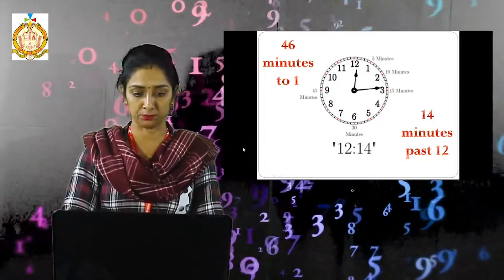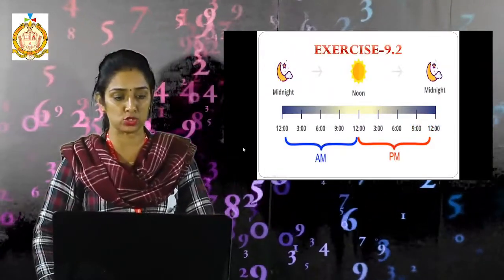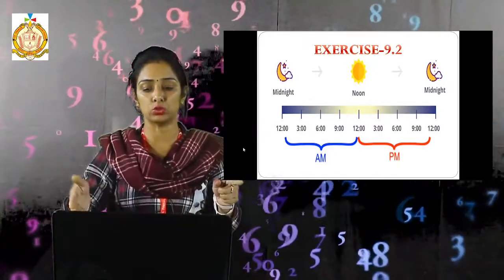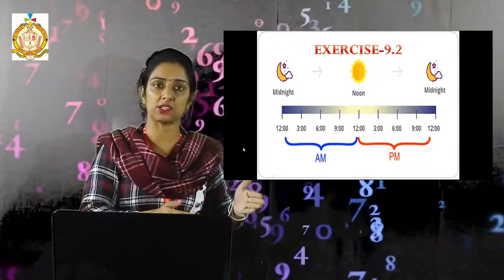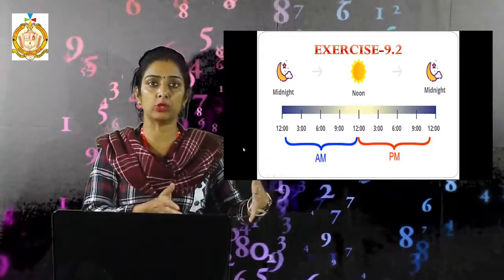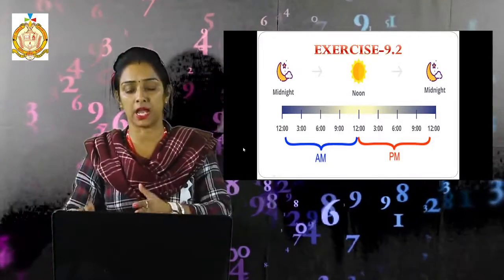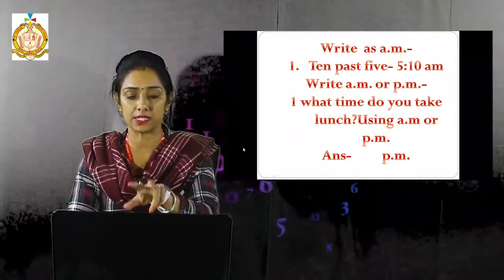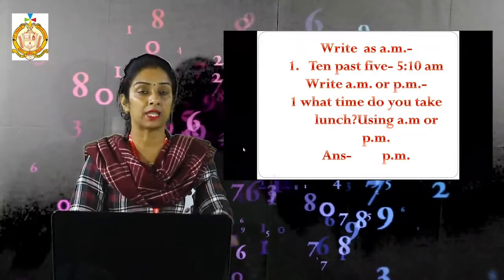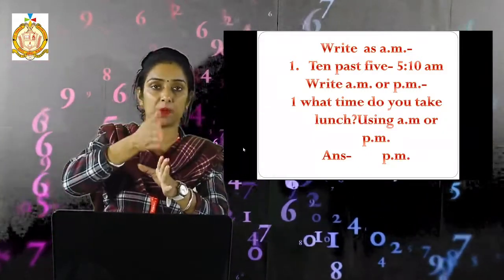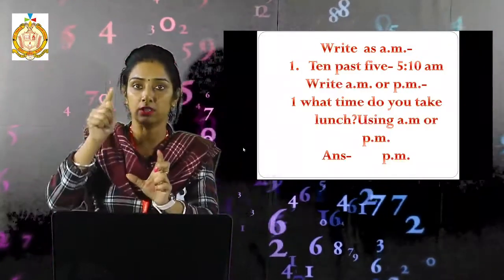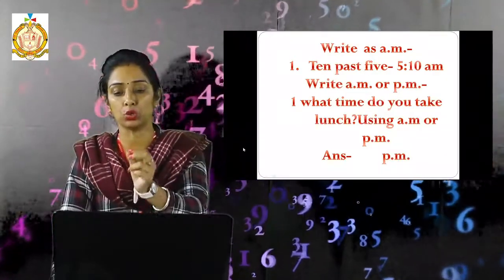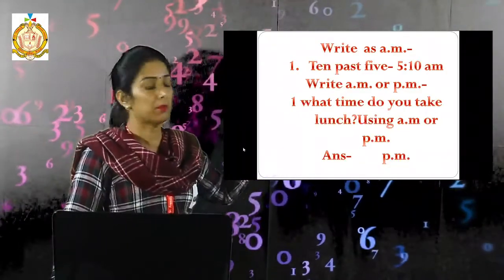See exercise 9.1 and 9.2. The time table shows: before noon it is AM and after noon it is PM. Midnight twelve to noon twelve is AM, and from noon to midnight is PM. For example, 'ten past five' means ten minutes past five, so we write it as 5:10 AM.